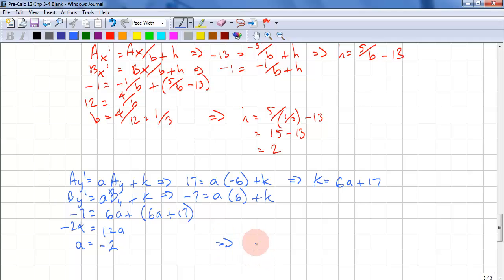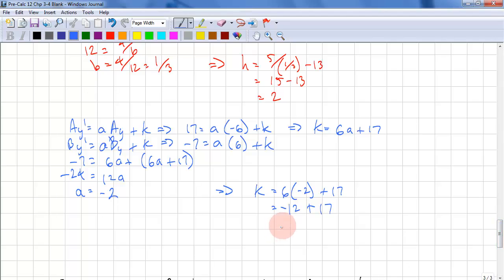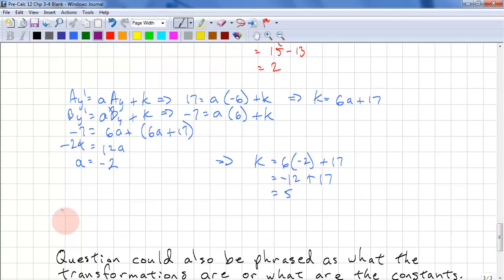This gives us, substituting back in, k = 6 times -2 + 17. So this is -12 + 17. And this equals 5. Coming up with our g(x). We have -2 times f(⅓x - 2) + 5.